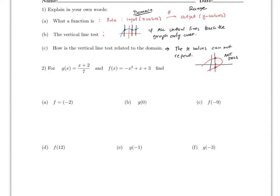In question number two, all you have to do is substitute the values. Remember what this notation means — f of minus two. There's a typo here; this should be just f of minus two. This is essentially asking: what is the y value, or the output, if x equals minus two?